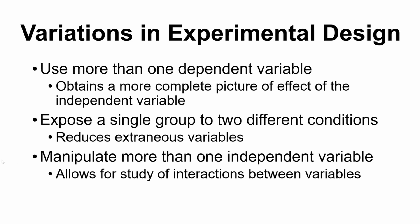The third point is that we can manipulate more than one independent variable, which lets us study interactions. We know from experience that most things are more complicated than just one particular variable controlling something else on its own — usually multiple factors are involved. If you design an experiment that manipulates multiple factors, you can get something closer to what we'd see in the real world. Those interactions can be very useful for understanding how things work in real life.